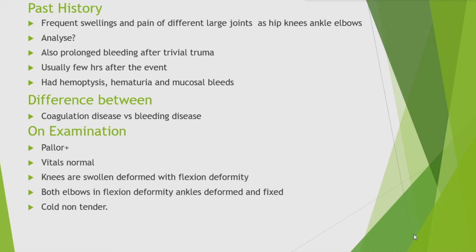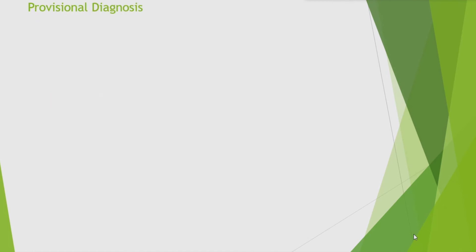On examination: pallor present, vitals normal. Both knees are swollen and deformed with flexion deformity, both elbows in flexion deformity, ankles deformed and fixed — cold and non-tender. These joints are not warm and not tender, so the possibility of acute arthritis is rolled out. Knee joints show possible hemarthrosis. He has a deforming type of arthritis — those joints are cold and not inflamed but only deformed, while the ankle joint was tender and warm.